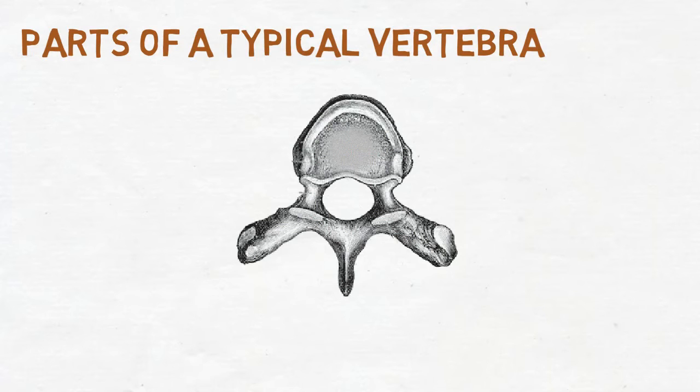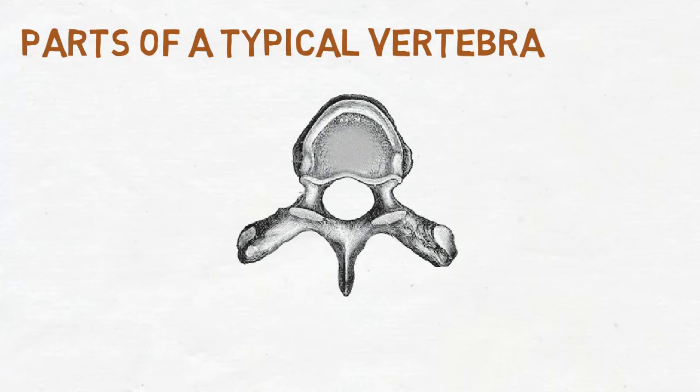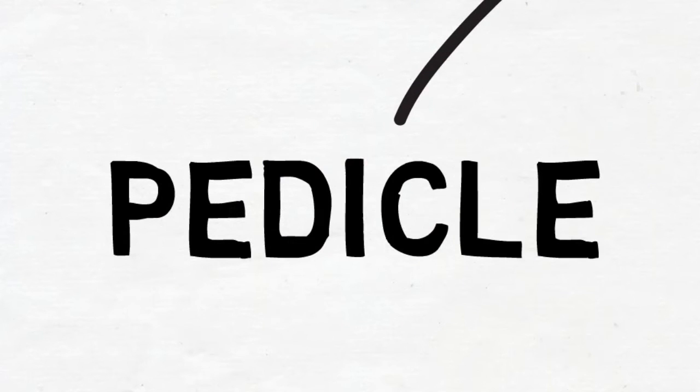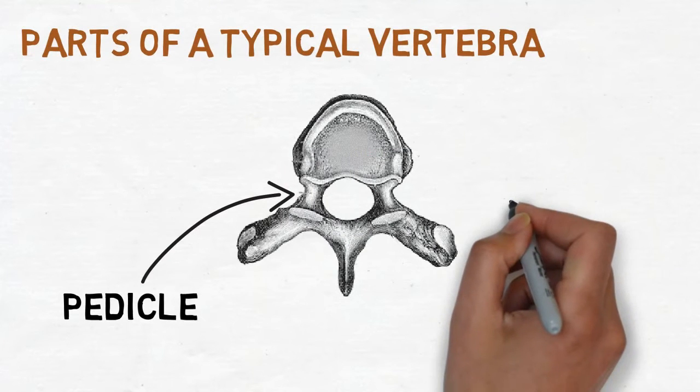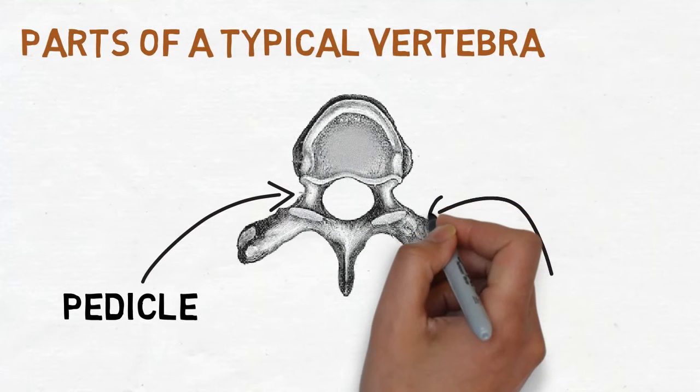This is the structure of a thoracic vertebra. Let's see the different parts present in a typical vertebra. This is the pedicle of the vertebra whose function is to connect the vertebral body with the vertebral arch. Don't worry, we'll see these structures later too.